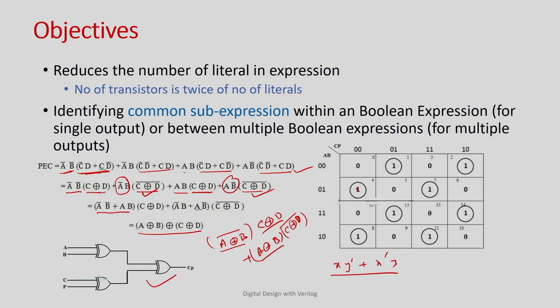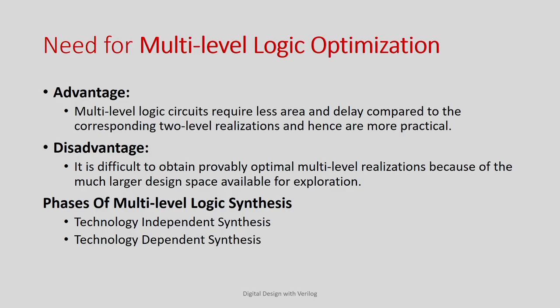Similarly, a Boolean multiplication example would show the same benefit. This confirms that multilevel optimization most of the time gives less area and less delay compared to two-level optimization. The disadvantage is that it is a very complex problem, so an optimal solution is sometimes difficult to get — we usually look for a near-optimal solution. This multilevel logic synthesis happens in both technology-dependent and technology-independent ways; in this course we focus on the technology-independent approach.